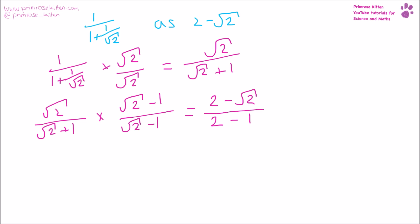Now, two minus one, we can cancel this down, so we have two minus the square root of two. Two minus one equals one. Anything divided by one is just going to give us two minus the square root of two, which is the answer we are looking for.